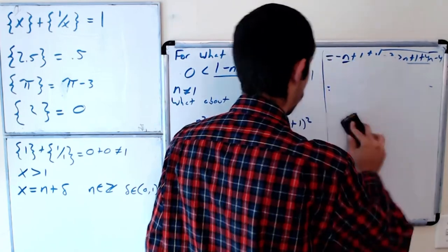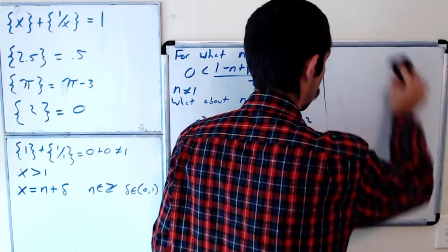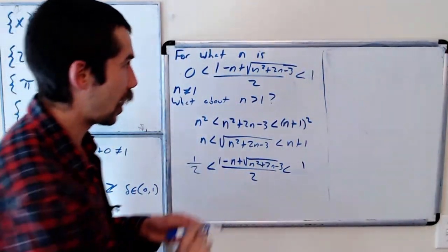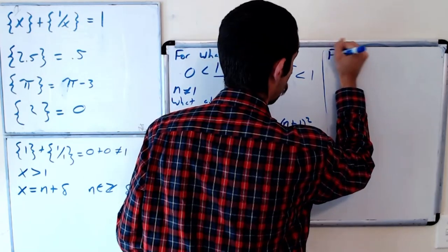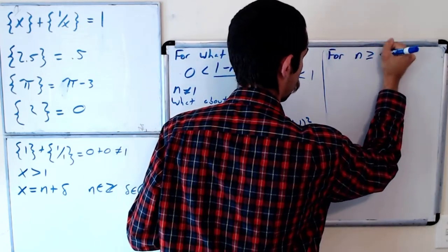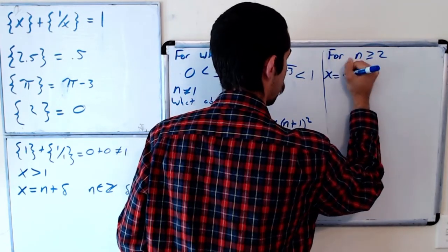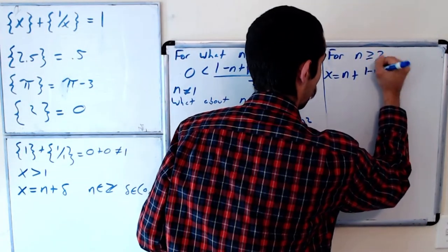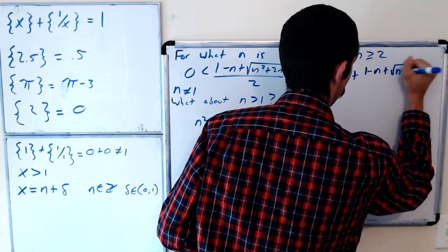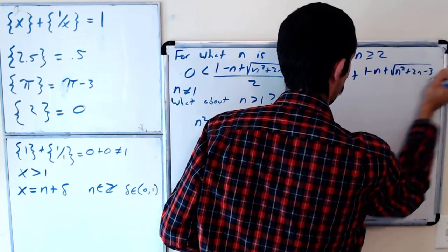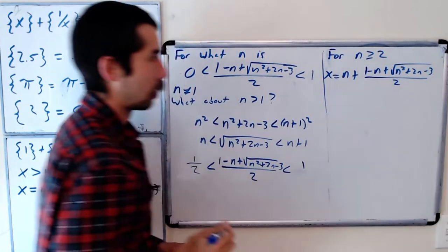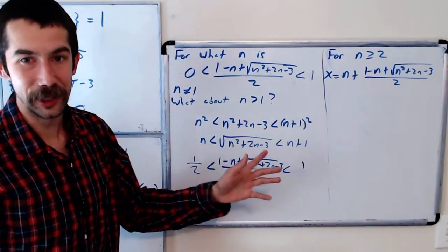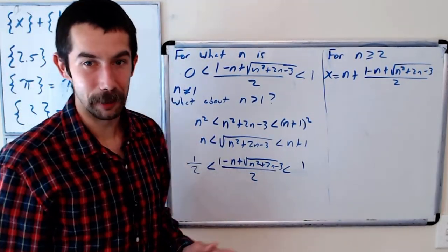that any x of the form, so for n greater than or equal to 2, x equals n plus 1 minus n plus the square root of n squared plus 2n minus 3 all over 2 is a solution to the equation we started with.